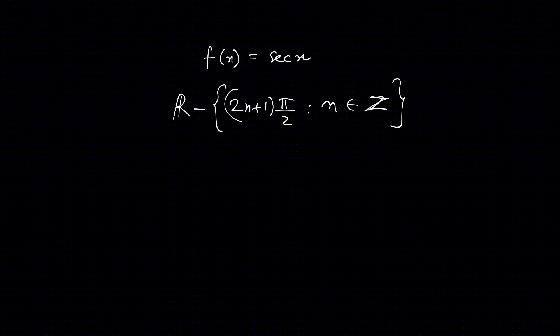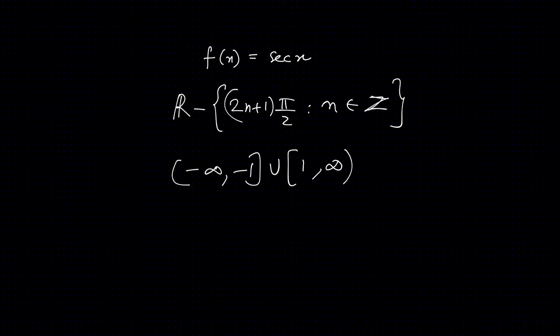Range. As I said, the cosine range is minus 1 to 1. So the range of sec(x) is minus infinity to minus 1, union 1 to infinity. Let's see the graph.